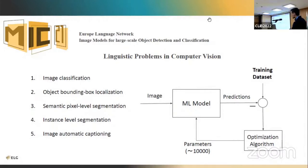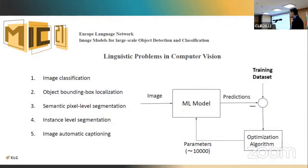All these machine learning tasks can be fit in a structure where we have a model and we send to this model a sequence of images. The model, which is of a network nature mostly in computer vision tasks, generates a set of predictions of structural information extracted from the image. We compare these predictions with a training dataset and use an optimization algorithm based on gradient methods to minimize the difference between prediction and training data.